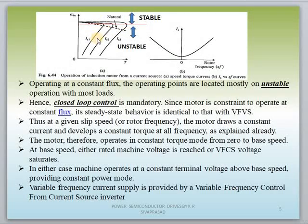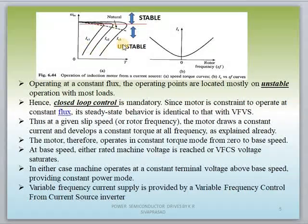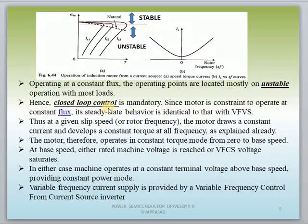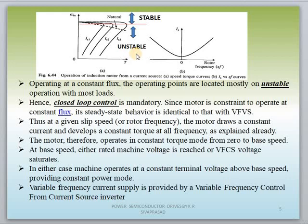The dotted line indicates the natural or actual speed-torque characteristics of the induction motor. The intersection points of this dotted line with the three graphs indicate the operating points — IS1, IS2, and IS3 each have their respective operating points. But all three operating points are located in the unstable region, that's why we require a closed loop control. It is mandatory because the machine is operating in the unstable region.